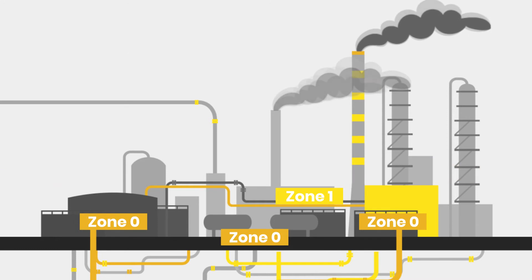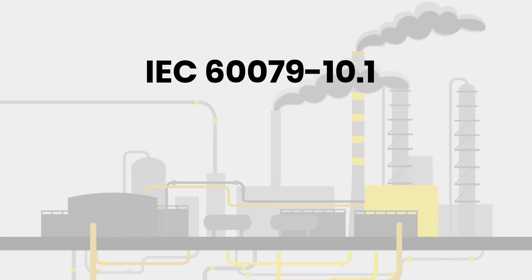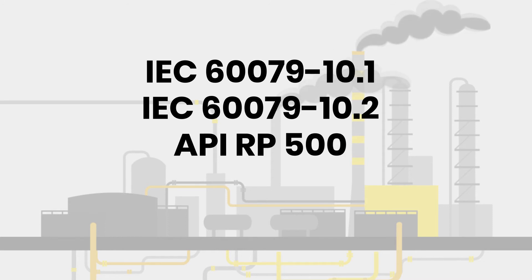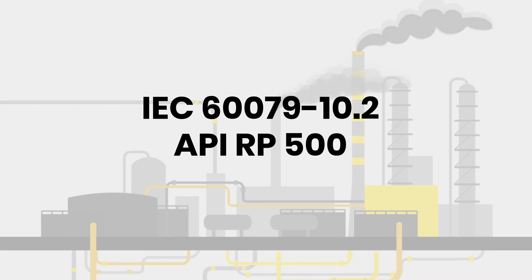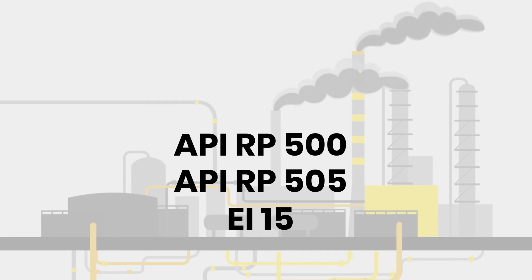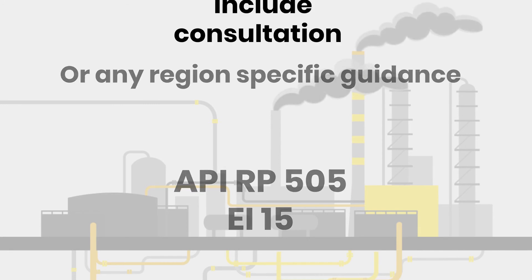Whether IEC 60079-10.1, IEC 60079-10.2, API RP 500, API RP 505, EI 15, or any region-specific guidance is judged as best practice for your specific installation.